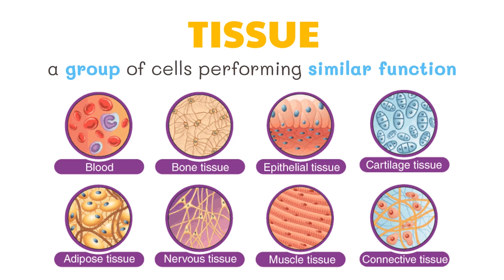A tissue is a group of cells performing a similar function. Muscle tissue, connective tissue, and neural tissue are some types of tissues. Histologists are an example of biologists who work at this level.